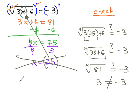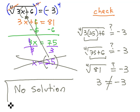As there are no solutions left, we will say there are no solutions to the equation, the fourth root of 3x plus 6 equals negative 3.